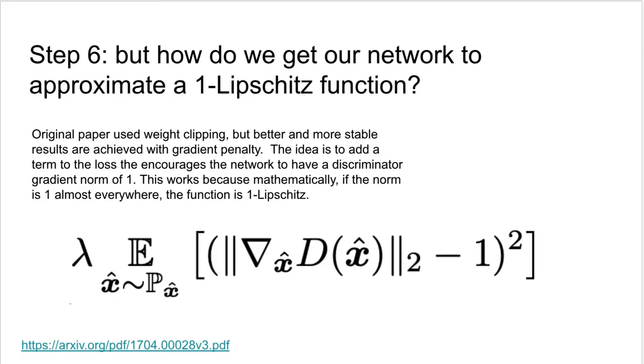I mentioned before that the function that the discriminator approximates has to be a one-Lipschitz function, for the whole business to work properly. How do we enforce that? The original Wasserstein GAN paper did it using weight clipping, but it turns out that there is a much better way of doing so. Gradient penalty. The idea is to add a term to the loss that encourages the network to have a discriminator gradient norm of 1. This works because, mathematically, the norm is 1 almost everywhere, the function is 1-Lipschitz.